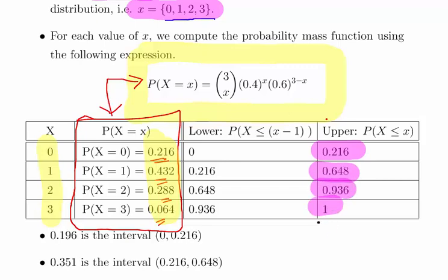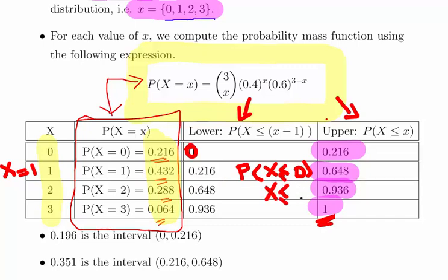I'm generating two tables: the lower bound and the upper bound. The upper bound is the probability of x less than or equal to x for x equals 0, 1, 2, 3. The lower bound is the probability of x less than or equal to x minus 1. So for x equals 1, this is the probability of x less than or equal to 0. We're generating an interval with these as the upper and lower bounds.